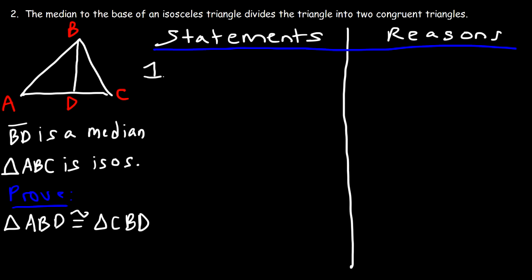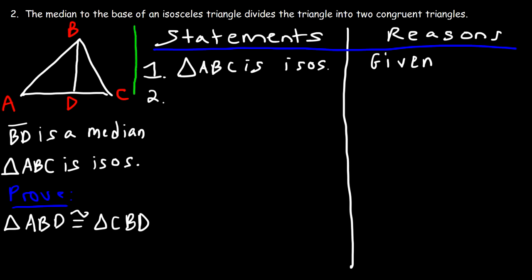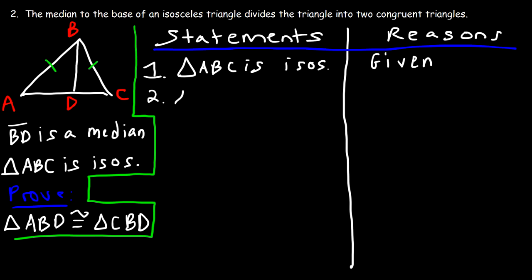The first statement is that triangle ABC is isosceles — given. The next statement: since ABC is isosceles, AB is congruent to BC. The reason is the definition of an isosceles triangle — the two sides of an isosceles triangle are congruent.